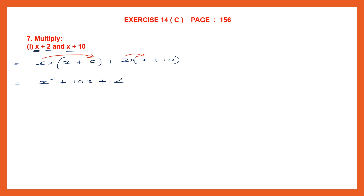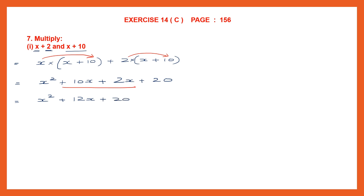2 into x is 2x. Now we go on to 2 into the next term, which is 2 into 10. 2 into 10 is 20. So here we have x square. Now here we have 2 like terms, that is 10x and 2x, and both have plus signs, so we add them up. 10 plus 2 is 12, so this becomes 12x. Our final answer is x square plus 12x plus 20.